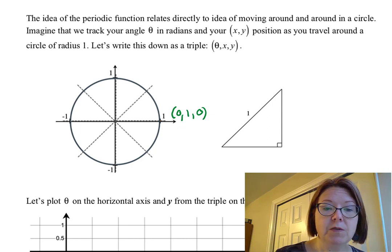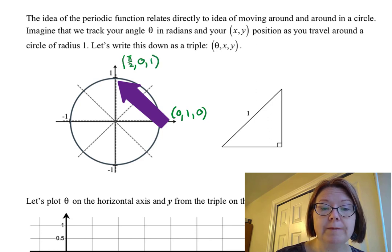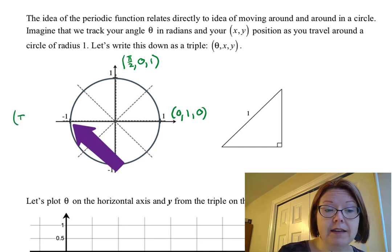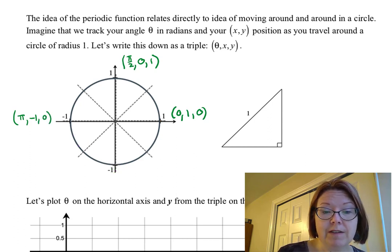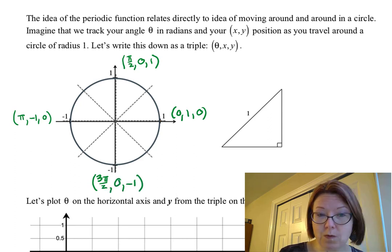When we get up to the 90-degree angle, or the pi over two angle, the triple would be: pi over two, x value of zero, and y value of one. When we get to 180 degrees, or pi radians, we would be at pi, negative one for the x value, and zero for the y value. And moving to 270 degrees, or three pi over two in radians, we'd be at three pi over two, with zero as the x value and negative one as the y value.